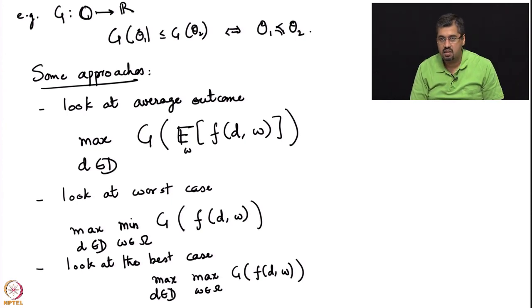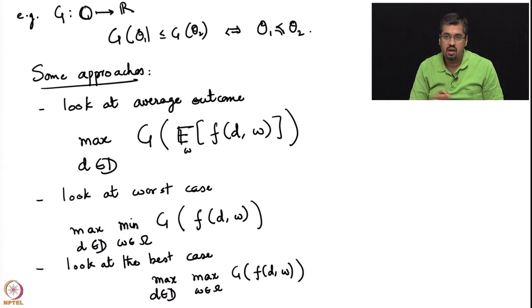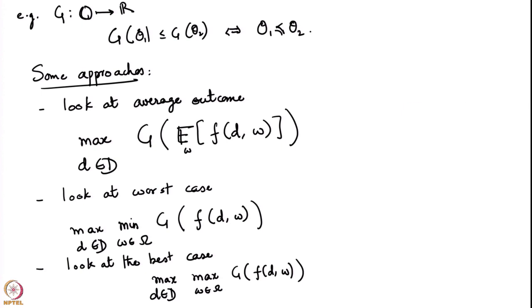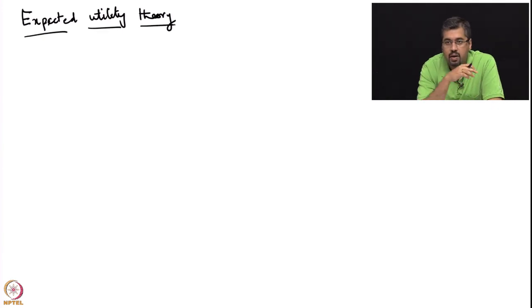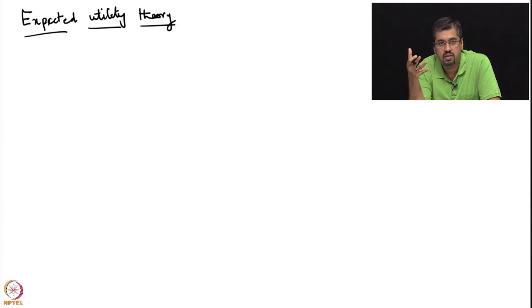It turns out that none of these approaches are actually complete — the kind of fallacy we saw in the earlier example will also arise with any of these approaches. There is a better approach, and that is what I will talk about. This approach comes from a field known as expected utility theory. This theory, in the course of its development, automatically gives us a notion of risk. You will see as I develop it that risk and our attitudes towards various types of lotteries all come out as a nice corollary of this approach.